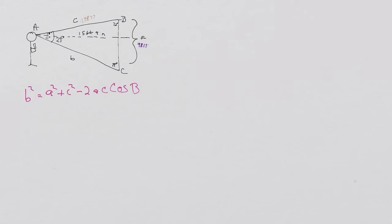And we already know side a, side c, and angle b, so we just plug these in. So we would get b² = 98.17² + 198